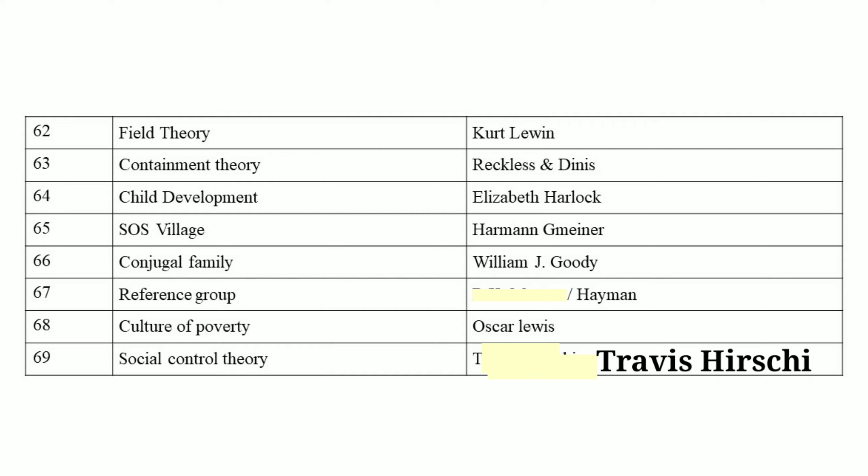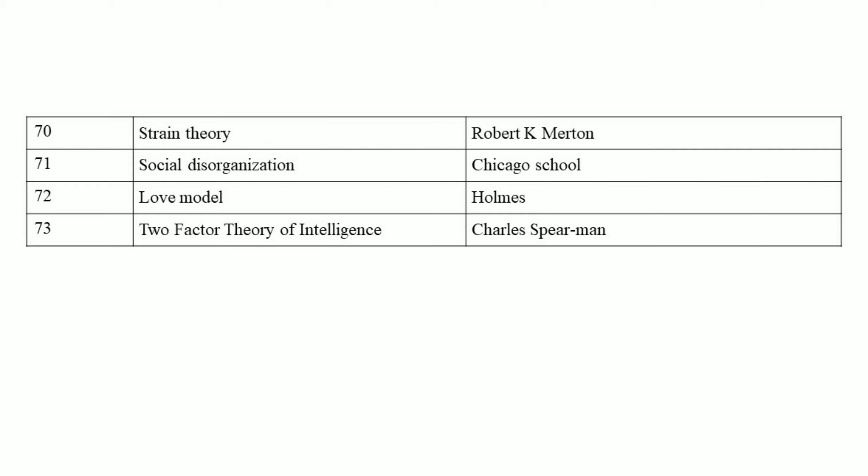Culture of poverty — the concept was put forward by Oscar Lewis. Social control theory by Travis Hirschi. Strain theory was put forward by Robert K. Merton. Social disorganization was developed by the Chicago School.